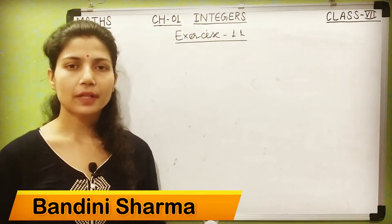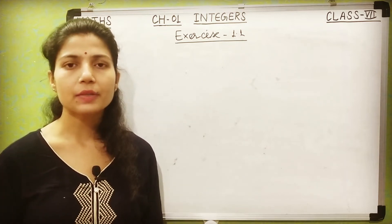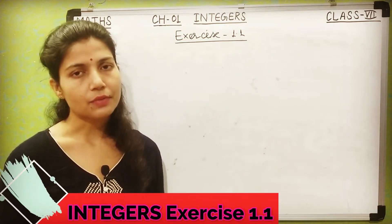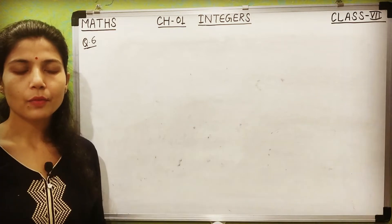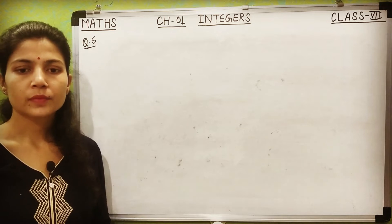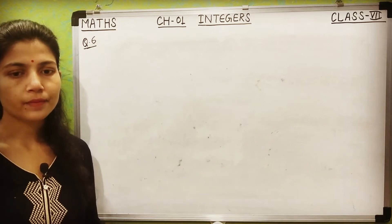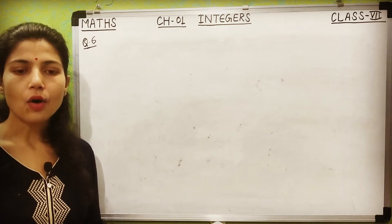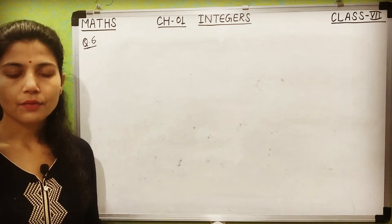Hello everyone, this is your Bandini Sarma. Welcome back to my channel BMB Tutorial. In the previous session we discussed questions 1 to 5 of Exercise 1.1, and in today's session we will discuss the further questions of Exercise 1.1. So let's start. Question number 6: Rita goes 20 km towards east from a point A to point B. From B, she moves 30 km towards west along the same road.